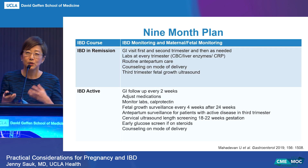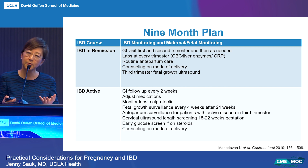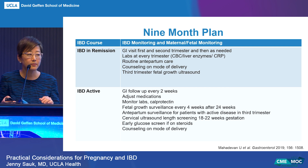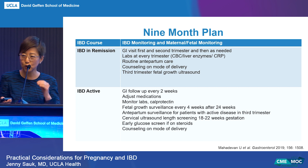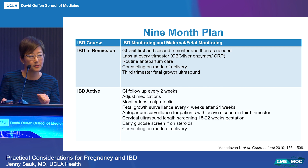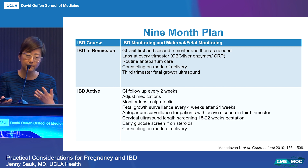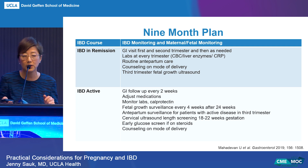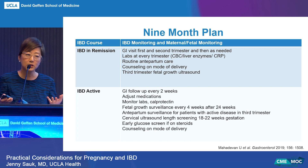Care during pregnancy really depends on whether a patient is in remission or has active disease. If they're in remission, you can follow them once each during first and second trimester, check labs at every trimester, perform routine antepartum care, counsel on mode of delivery, and measure third-trimester fetal growth ultrasound. If they're active, you want to see them every two weeks and do everything you can to control disease activity with limited steroids. You should track fetal growth surveillance every four weeks after 24 weeks, ensure antepartum surveillance in the third trimester, and perform cervical ultrasound length screening at 18 to 22 weeks. If they're on steroids, also do early glucose screening.